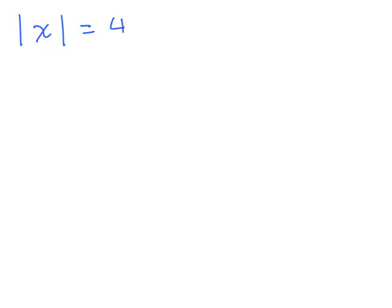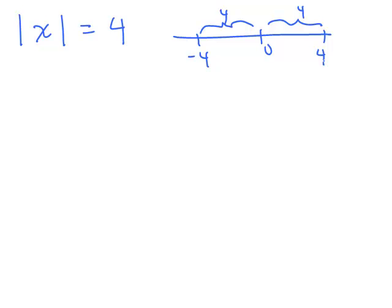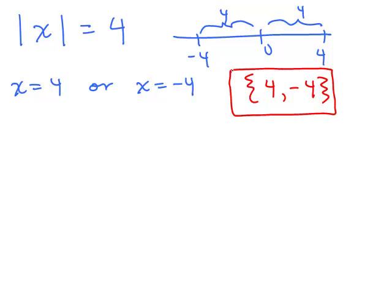Try this problem: absolute value of x equals 4. Solve for x. You could do this by looking at a number line — going 4 spaces to the right and 4 spaces to the left, you'll end up on negative 4 or 4. Or you can take the equation as it is: whatever's in that absolute value, x, could either equal 4 or it could equal negative 4. So the solutions are x equals 4 or x equals negative 4.